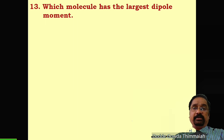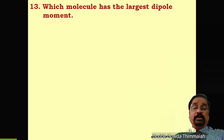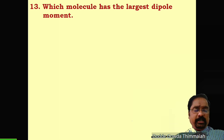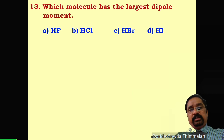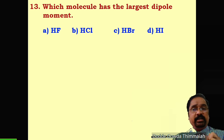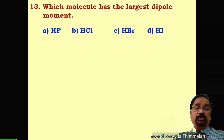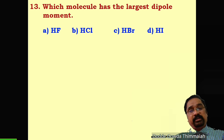Question 13: Which molecule has the largest dipole moment? Dipole moment is decided by electronegativity — higher the electronegativity of the atom, more the dipole moment. The options are HF, HCl, HBr, and HI. As we go down the group, atomic size increases and electronegativity decreases. Among these, fluorine has the highest electronegativity. Therefore, hydrogen fluoride has the largest dipole moment — first option is correct.